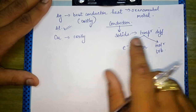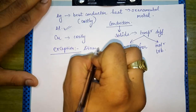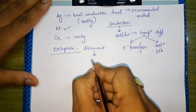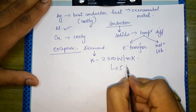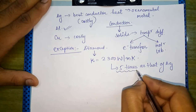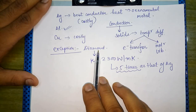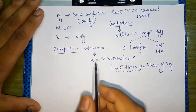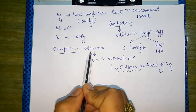There is an exception for diamond. Diamond has a very high thermal conductivity of about 2300 watts per meter kelvin, which is about five times that of silver. However, since diamond is much more costly than silver, it is not practically used. Diamond is actually a very good conductor of both heat and electricity.